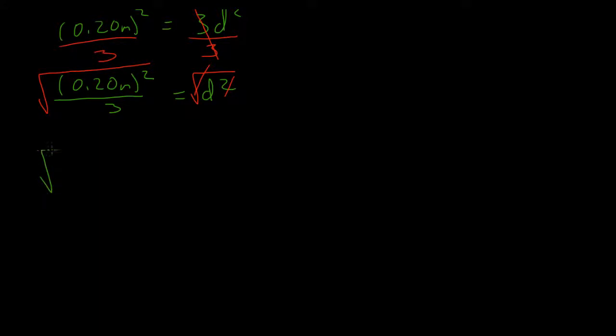And we will get the square root of 0.20 meters squared over 3 equals D. And when we take the square root of a fraction, we just take the square root of the top and the square root of the bottom.